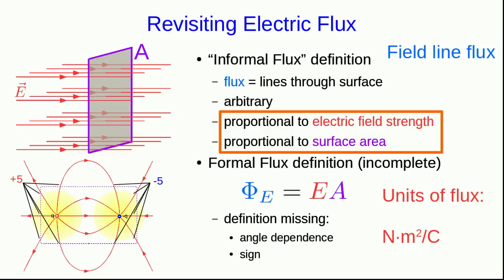However, we can already state what the units of flux must be. If we're working in SI units, then this E field is in newtons per coulomb, and this area will be in meters squared, and so the units of flux must be newton meters squared per coulomb.